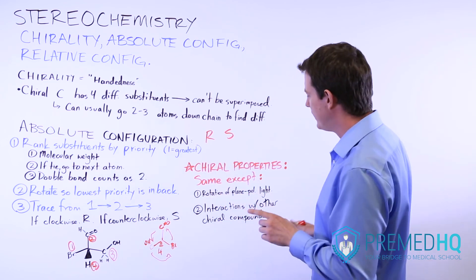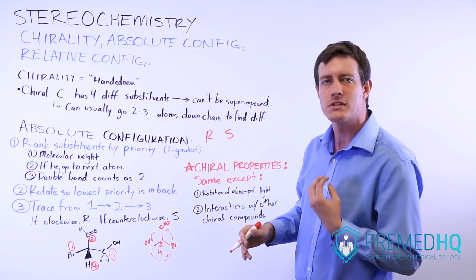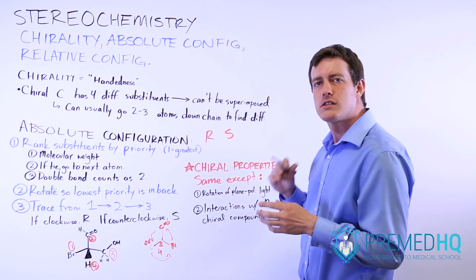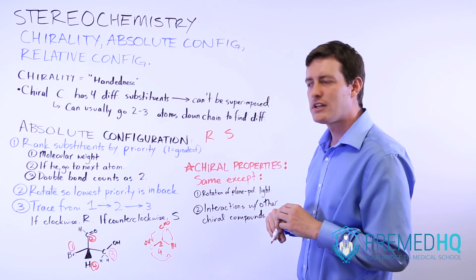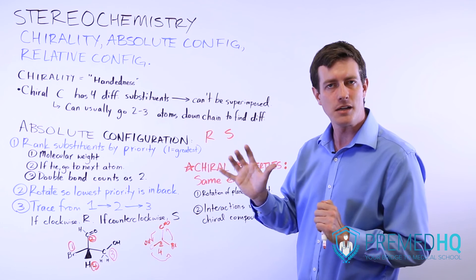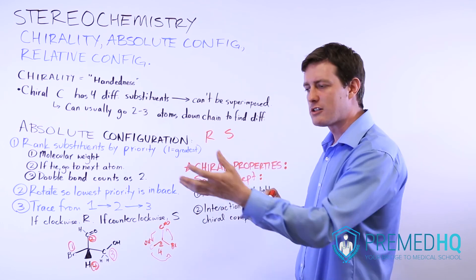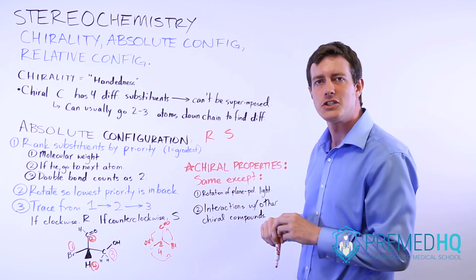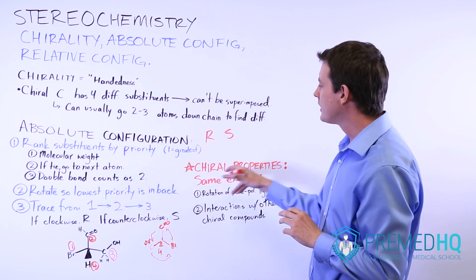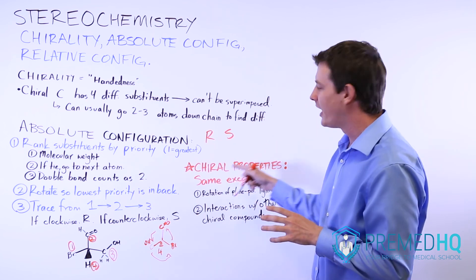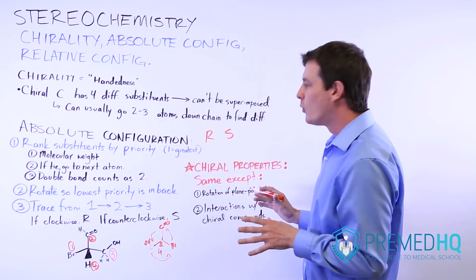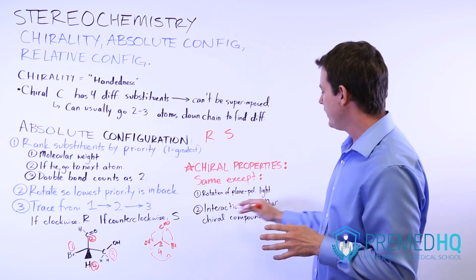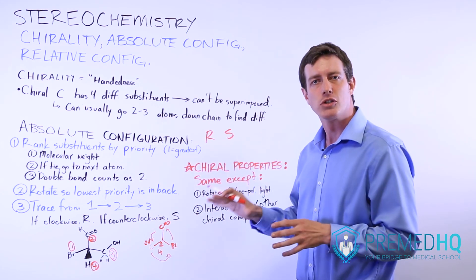The second difference is that sometimes, with enzymes and biomolecules, they will interact specifically based on their chirality. Certain chiral compounds will interact well with chiral enzymes and certain ones won't. This becomes important in physiology. If two things are identical compounds except for their chiral properties, the only differences will be that they rotate plane-polarized light differently and may interact differently with other chiral compounds.